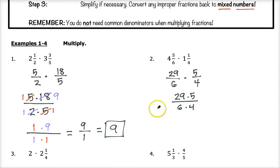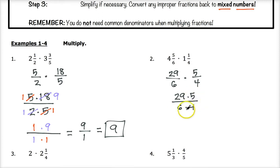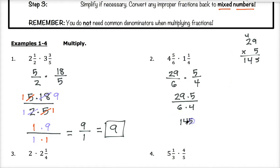I look for opportunities to cancel. In this case I don't have any. 29 is prime so I can't divide it by anything in the denominator, and the same thing with five on the top — I can't cancel it with either six or four. So I'm just going to multiply 29 times five to get my numerator. 29 times five is 145, and in the denominator six times four is 24.